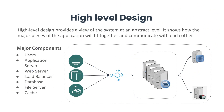The next step is high level design, which is a general system design that provides a view of the system at an abstract level. It shows how the major pieces of an application will fit together and communicate with each other. Its main goal is to convert business requirements to a high level solution. It mentions all the platforms, systems, services, databases and processes that the product would depend on, and establishes relationships between system modules and features. Some major components generally used in high level design are users, applications, web servers, load balancers, databases, file systems and cache.